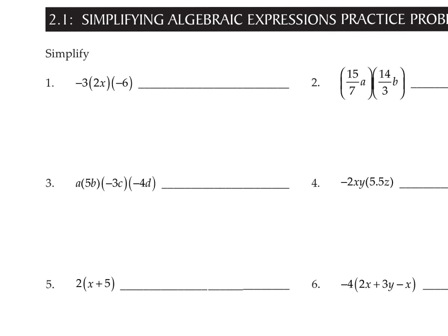Bring the coefficients to the front. Negative 3 times 2 times negative 6 — the variables hang on. Then we just multiply the coefficients together. Negative times positive times negative makes negative. 3 times 2 is 6, 6 times 6 is 36. So this becomes negative 36x.